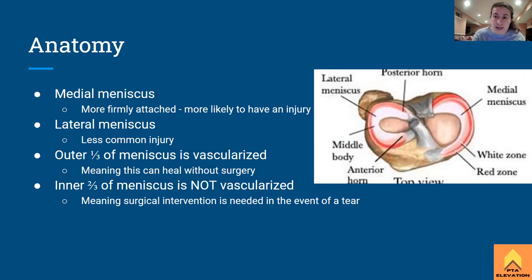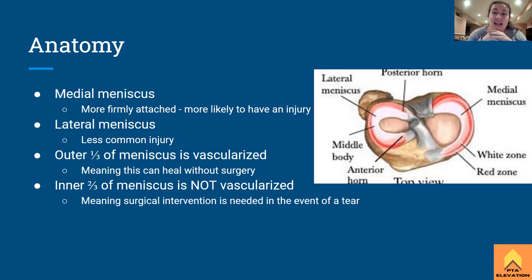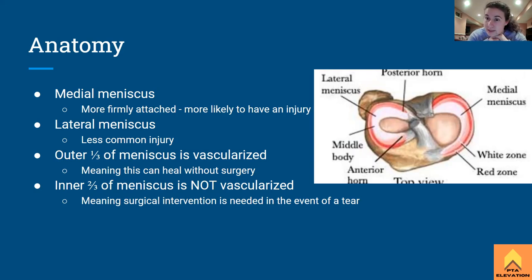If somebody has a tear to the outside of the meniscus — the outer one third, which is the red zone — they can heal with conservative PT management: general strengthening, range of motion, all that stuff. Now the inner two thirds of the meniscus is not vascularized, meaning that surgical intervention would be needed in the event of a tear. The outside can be spontaneously healed, while the inside cannot heal on its own because there is no blood flow to the area — that's why it's called the white zone.